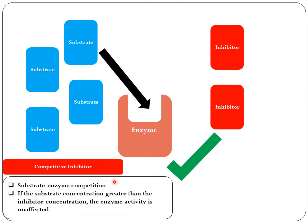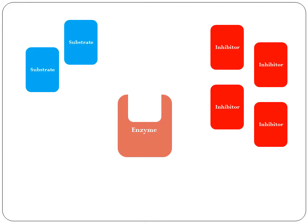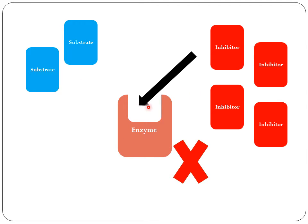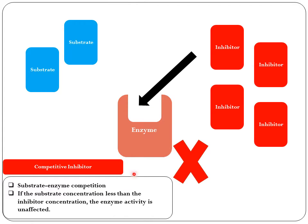When the concentration of the substrate is greater than the concentration of the inhibitor, the enzyme activity is unaffected because the substrate can easily bind at its active site. On the other hand, when we have higher quantities of inhibitors than substrates, the inhibitors will win the competition and sit on the active site, impairing the activity of the enzyme.